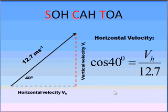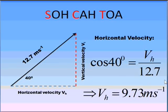Putting numbers in, you can see that the cosine of 40 degrees will be v_h divided by 12.7, the hypotenuse of the triangle. If we then rearrange and solve this, we will get our final solution of v_h, the horizontal velocity, being 9.73 ms.